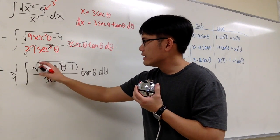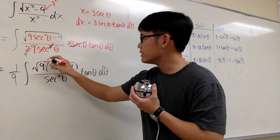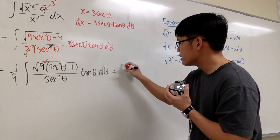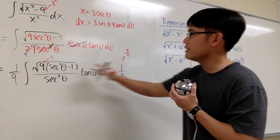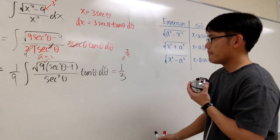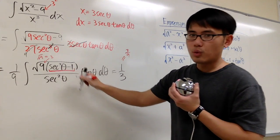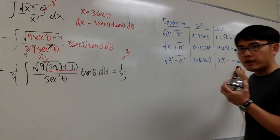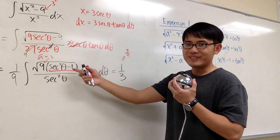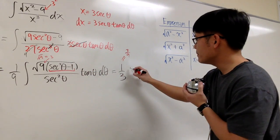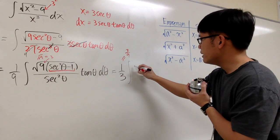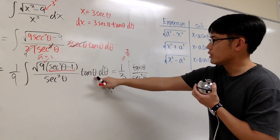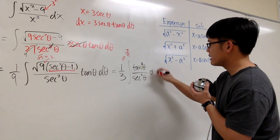We also have another secant theta from the dx, so I can cancel one out and we have secant squared theta remaining in the denominator, with tangent theta d theta on the side. So we now have the square root of 9 times the quantity secant squared theta minus 1, all over secant squared theta, times tangent squared theta d theta.